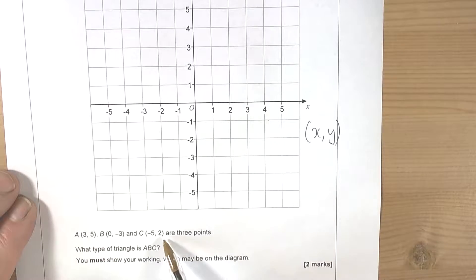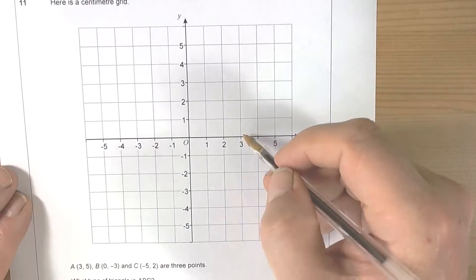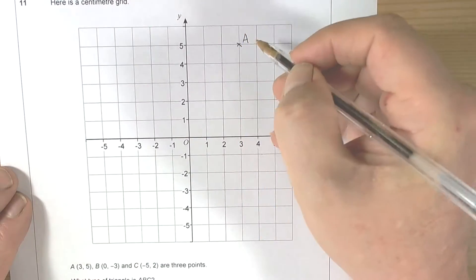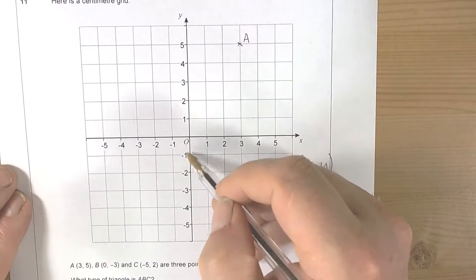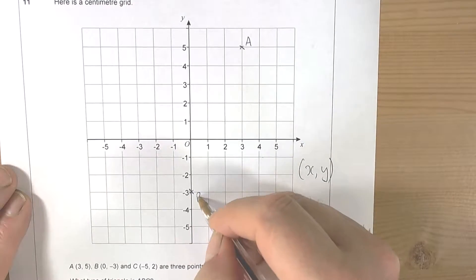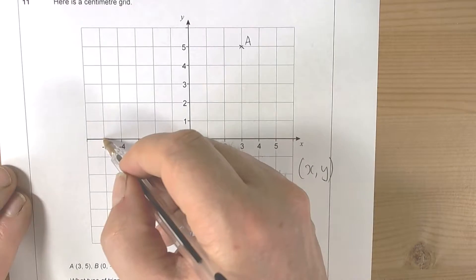We'll need to plot them to see what's going on. Point A is three along and then five up, and we label that A. Point B is zero negative three, so zero on the X axis and down to negative three, and that's B. Point C is negative five first and then up to two, and that's C.